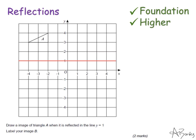Or you can do it by counting which is the method I generally use. So this vertex here is 2 squares away from the line, so I'm going to go a further 2 squares away and that's where that point will end up.